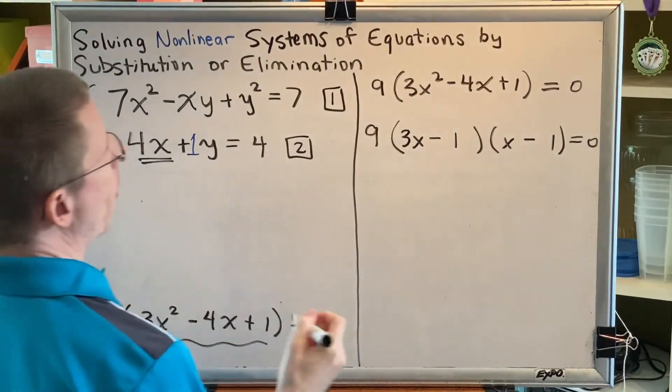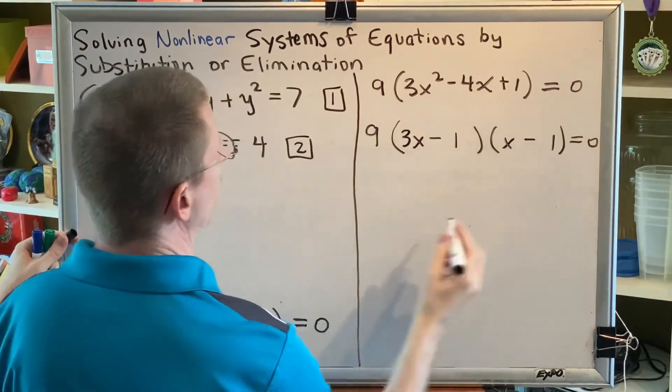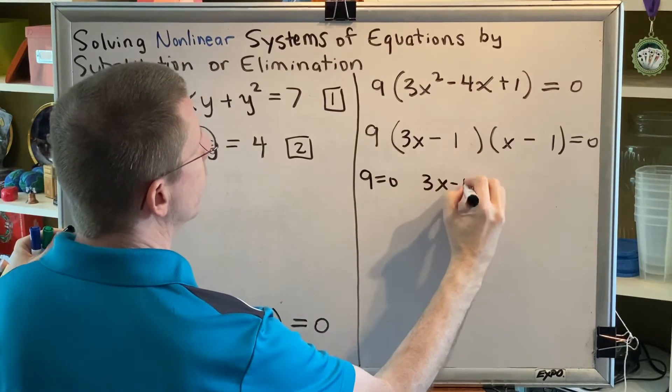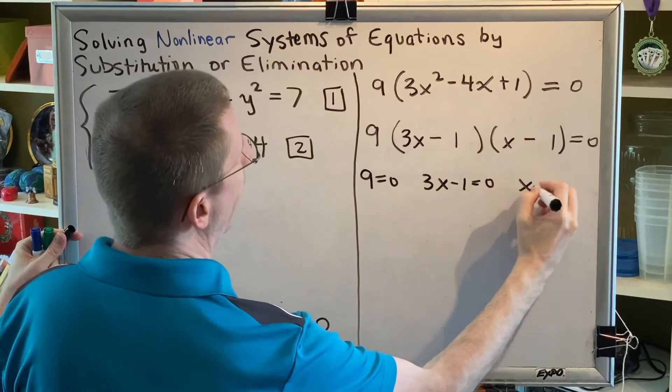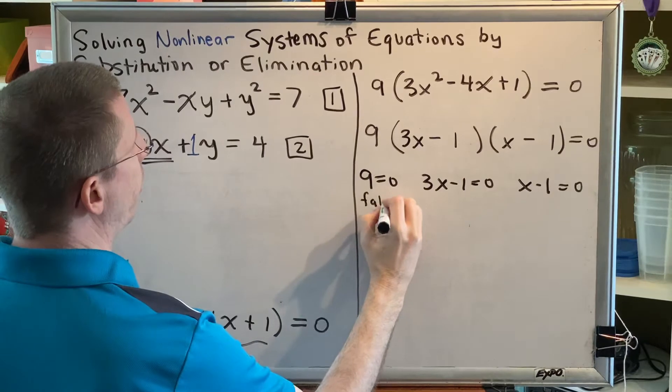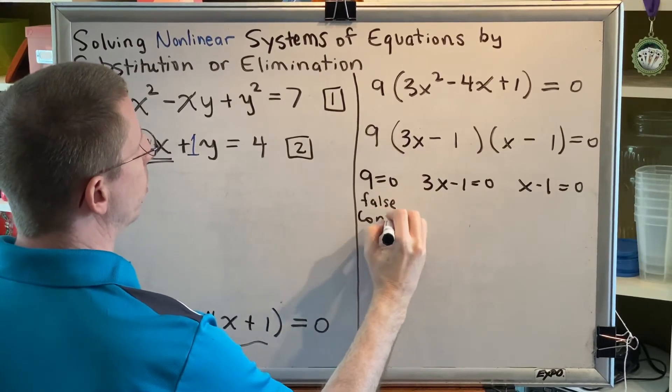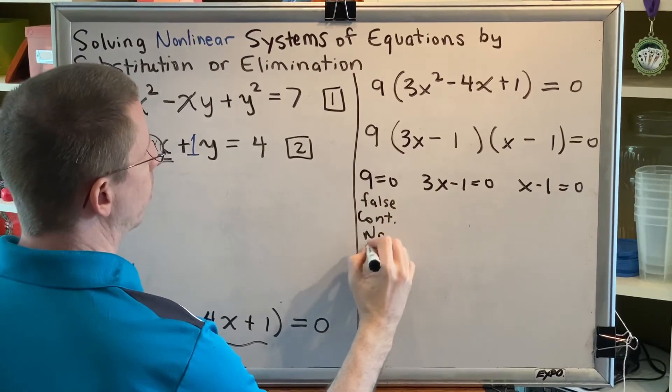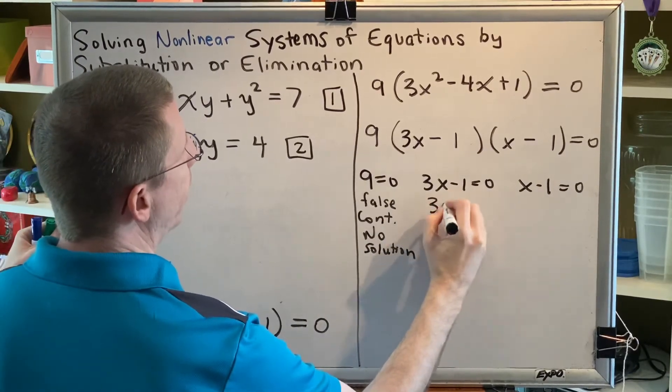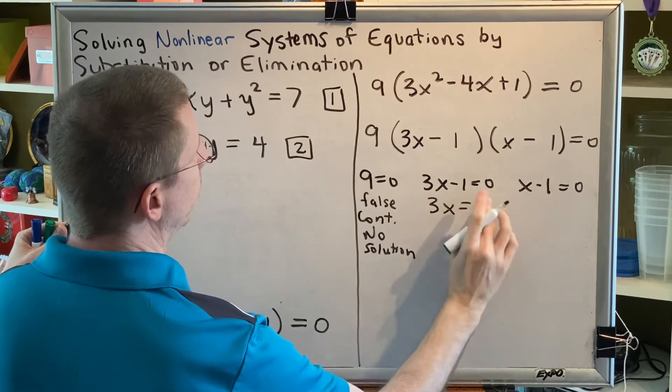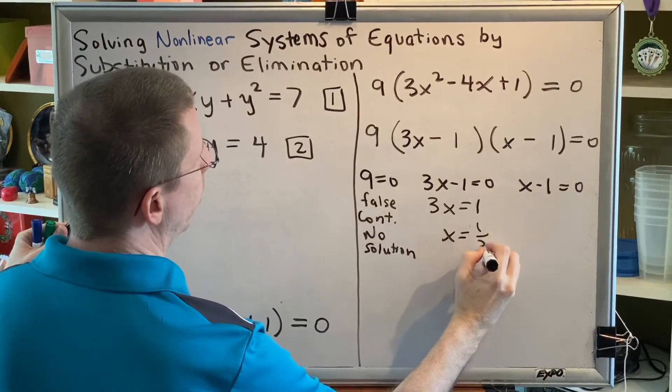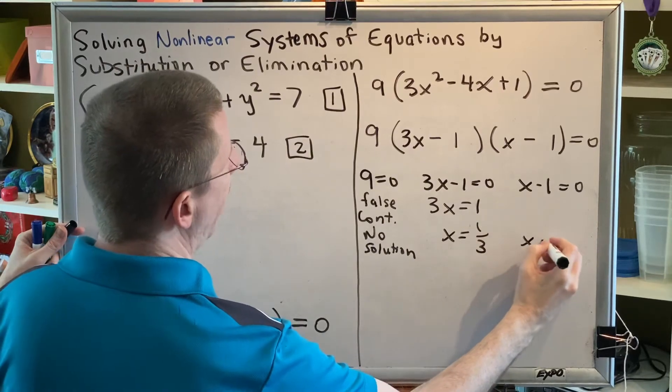Now we can use the zero product property. Set each factor equal to 0. So we get 9 equals 0, 3x minus 1 equals 0, x minus 1 equals 0. 9 equals 0 is false, that's a contradiction and therefore has no solution. This does not give us a value of x. Adding 1 to both sides, I get 3x equals 1, x equals 1 third. Adding 1 to both sides, I get x equals 1.